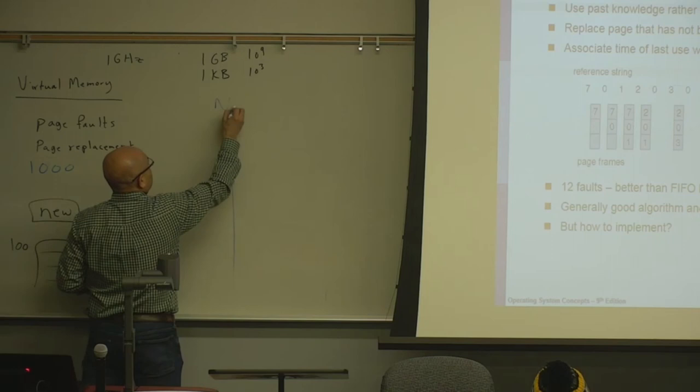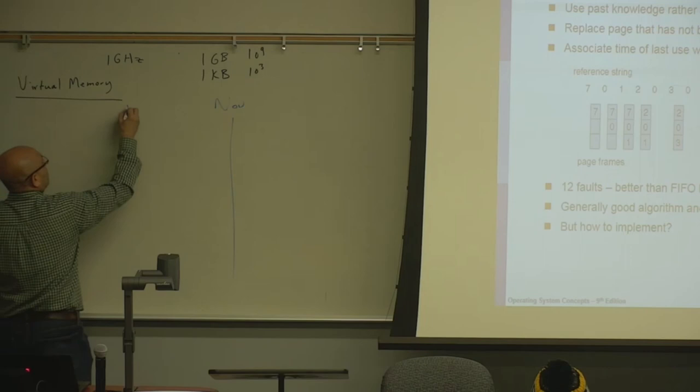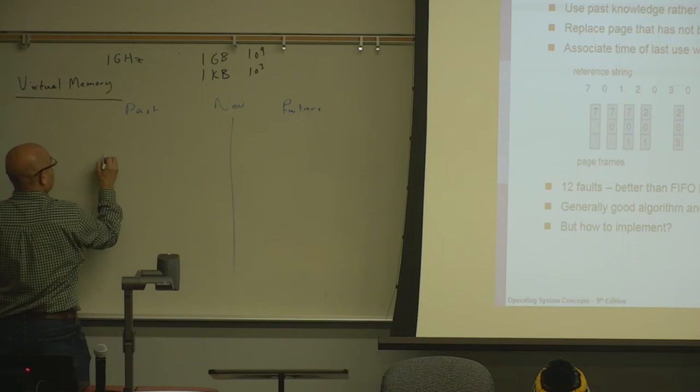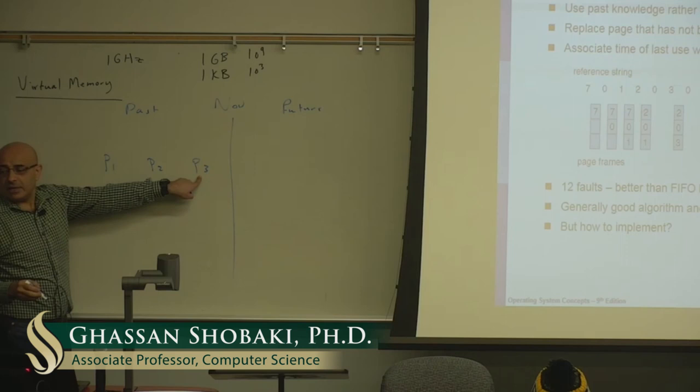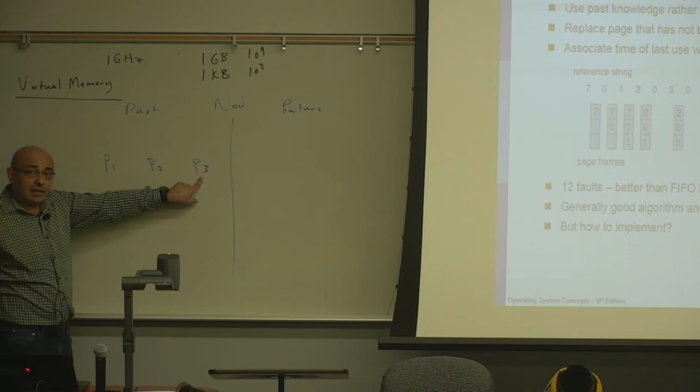LRU looks into the past because the system can track the past, even though implementation is non-trivial. The page that hasn't been used for the longest time is the page least likely to be used in the future — this implies temporal locality. The most recently used page is likely to be used again in the near future, so we keep it and replace the least recently used one instead.